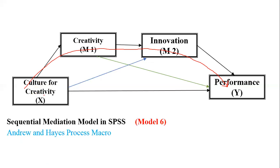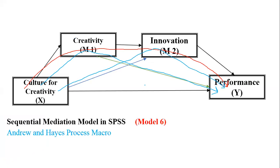There are two more parts available. The first additional part is from culture to creativity to performance — this has one mediator. The second additional part is from culture to innovation to performance — also one mediator. So in total we can see three mediating parts: one with a single mediator M1, a second with a single mediator M2, and a third which is the sequential mediation through both. This other part is known as the direct path.